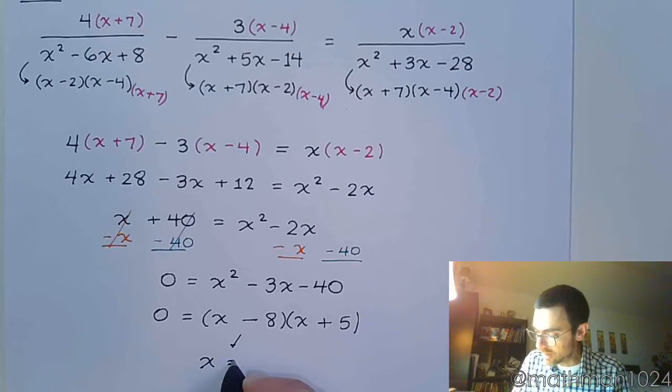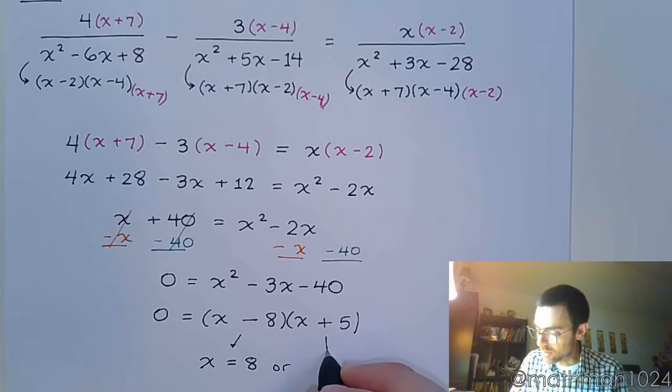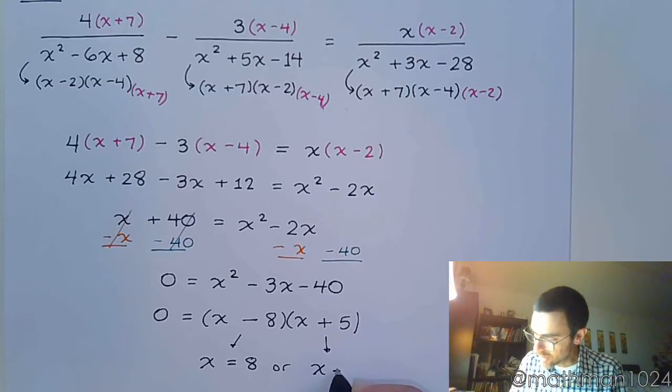And then we just finish solving this. So from (x - 8), x = 8, or from the other factor, x = -5.